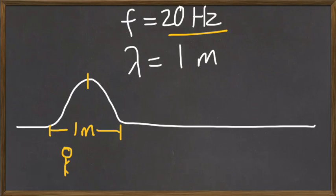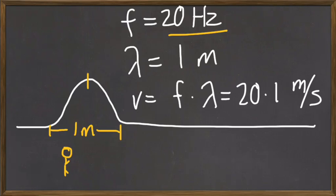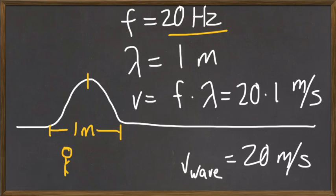Let's say that this wave has a wavelength of 1 meter. Then its speed is going to be equal to the frequency times the wavelength, or 20 times 1 meters per second, and that is 20 meters per second. So, this wave is moving at 20 meters per second.